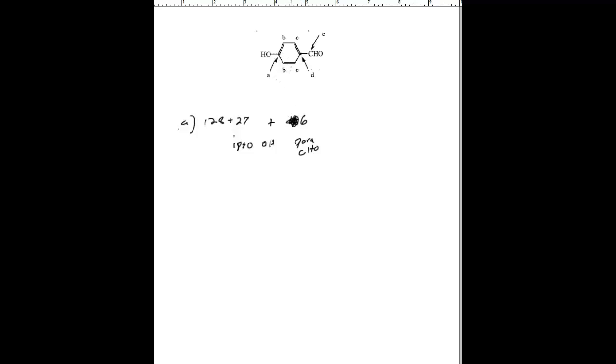The B and C carbons don't have substituents, so they are not adding to your overall shifts. So adding this up, 128 plus 27 plus 6 is going to give us a total of 161 parts per million. So this is where we would expect to see the carbon in the A position in our NMR.